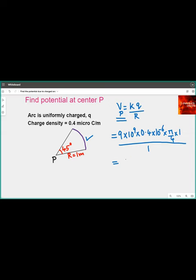When we simplify this we get 900 pi. So this will be the potential at the center P for this arc.